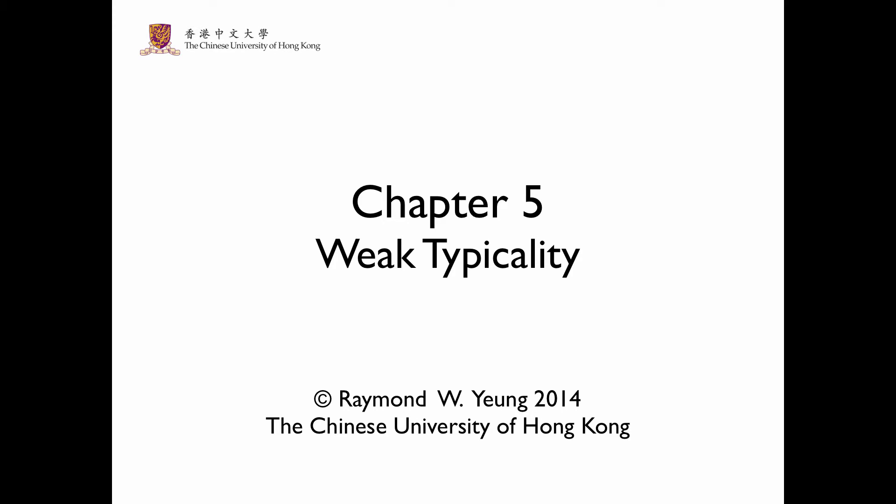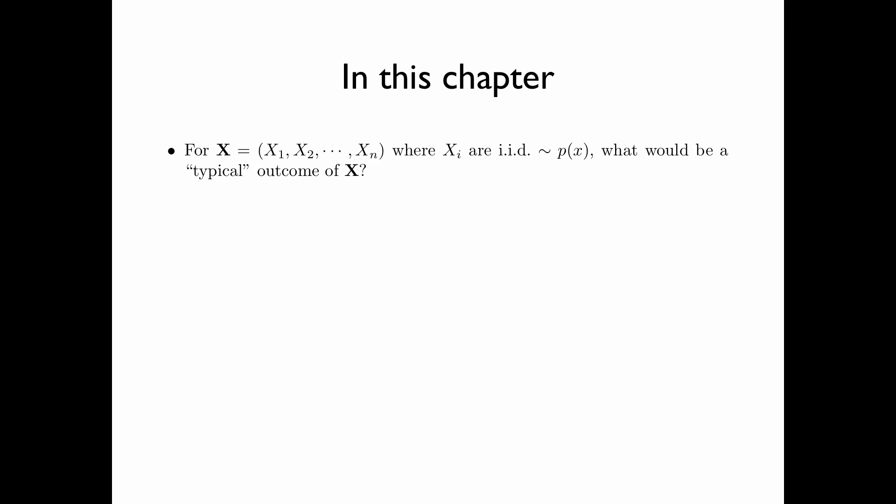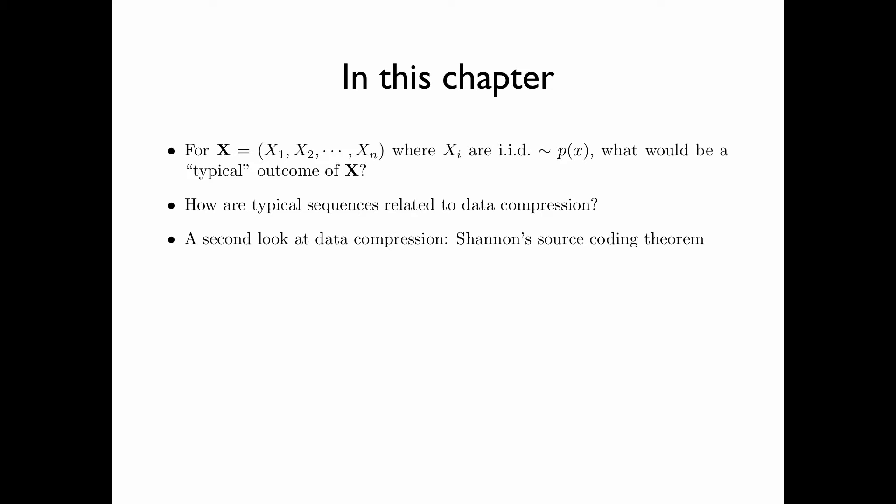Chapter 5: Weak Typicality. In this chapter, we address the following issue: for a random vector x equals x1, x2 up to xn, where xi are IID with distribution px, what would be a typical outcome of the random vector x? We are going to see how typical sequences are related to data compression. Specifically, we will take a second look at data compression, namely Shannon's source coding theorem.